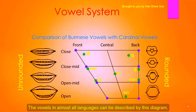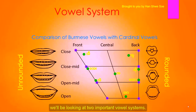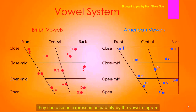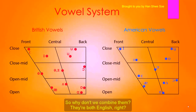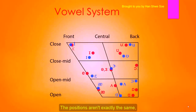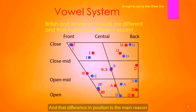The vowels in almost all languages can be described by this diagram, whether you are learning English, French, German, Japanese, or Korean. Since you are learning English, we will be looking at two important vowel systems: British and American vowels. They can both be expressed accurately by the vowel diagram. However, we can't simply combine them, because they are not the same — the positions aren't exactly the same, and some symbols differ. That difference in position is the main reason why we have a British accent and an American accent.